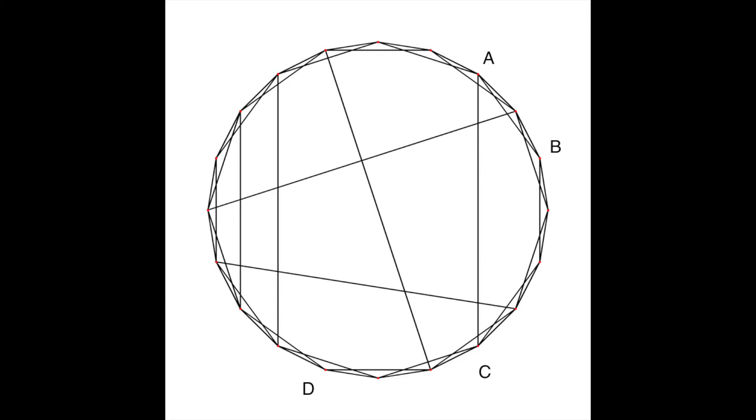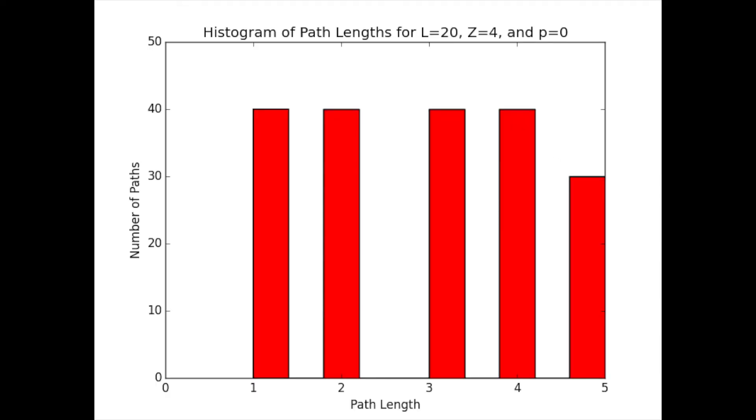For example, in this graph, the path length from A to B is 1. The path length from A to C is also 1. But the path length from A to D is 3. When shortcuts are added in the network probabilistically, the average path length over all the nodes decreases.